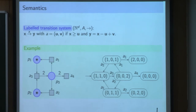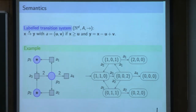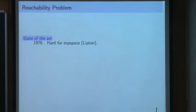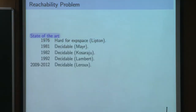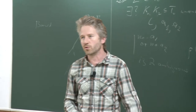So for Petri Nets there is a central problem - many problems reduce to that problem - which is the reachability problem. You provide two configurations, an initial one and a final one, and ask: does there exist a path that leads from the initial one to the final one? The reachability problem was proved to be exponential space hard by Lipton in 1976, and then four years later it was proved to be decidable by Mayr. The algorithm's presentation was improved by Kosaraju one year later and by Lambert ten years later, and nowadays we call it the KLM algorithm.